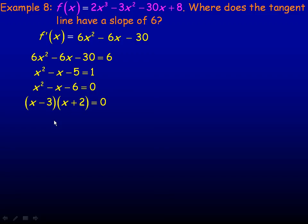And then we set each of those factors to 0. So if we set x - 3 to 0, we get 3. If we set x + 2 to 0 and solve for x, we get -2. Notice just the opposite signs. So where x is 3 and where x is -2 are two points where this curve has tangent line slopes of 6.